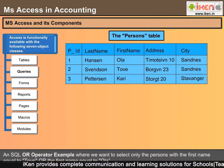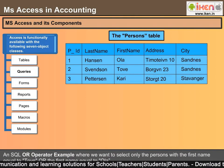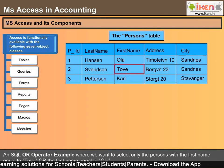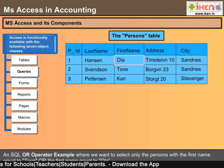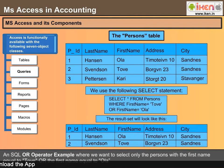Here is an SQL OR operator example, where we want to select only the persons with the first name equal to Tov or the first name equal to Ola from the table below. We use the following SELECT statement and the result set will look like this.